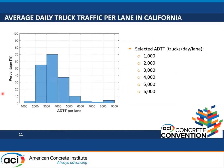The next consideration is average daily truck traffic per lane. Here is the distribution of traffic in California. California traffic has very high volume in comparison to all other states we have been working on. Based on this analysis, we selected several different average daily truck traffic values varying from 1,000 to 6,000.